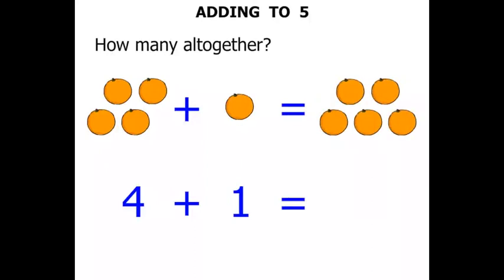Once we add them together, 1, 2, 3, 4, 5. We get 5 as our answer. So our number sentence: 4 plus 1 equals 5. Terrific!